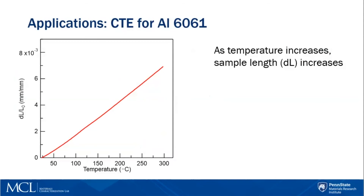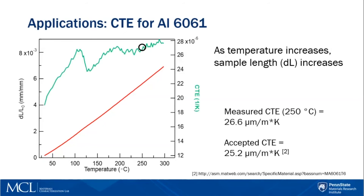A third example is for measuring the coefficient of thermal expansion, the CTE value, for a 6061 aluminum alloy. This sample was tested on a TMA, a thermomechanical analyzer. For this experiment, a force of 0.02 newtons was held constant on the sample as the temperature was increased. The change in length, the DL over L0, was then measured as a function of temperature. What you notice is that as the temperature increases, the sample length also increases. From this plot, we are able to calculate the CTE value, which at 250 degrees matches fairly well with the accepted CTE value for this specific alloy.